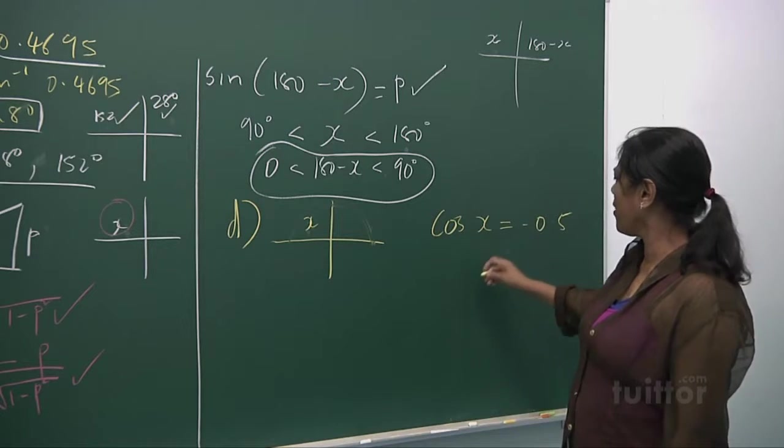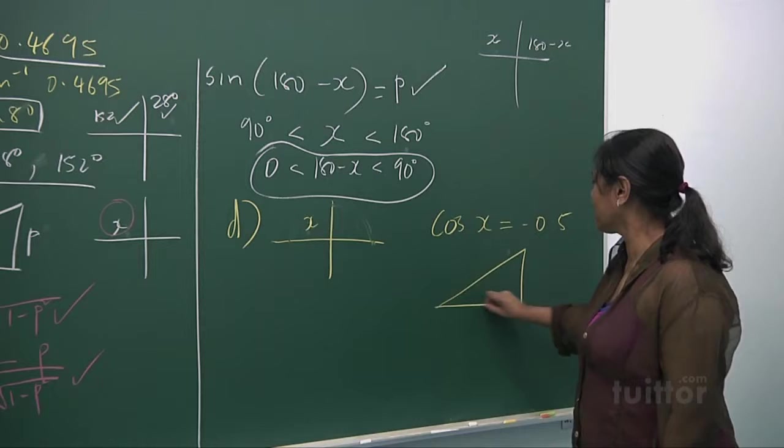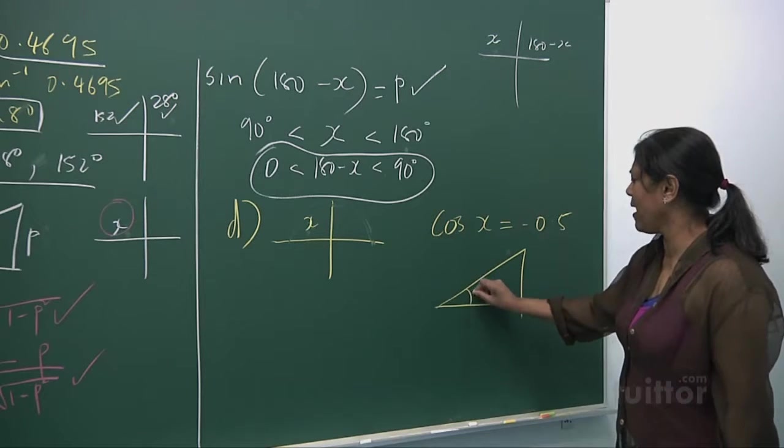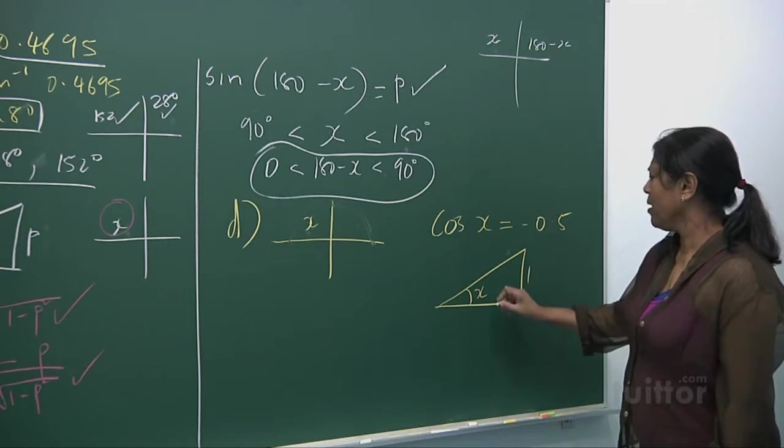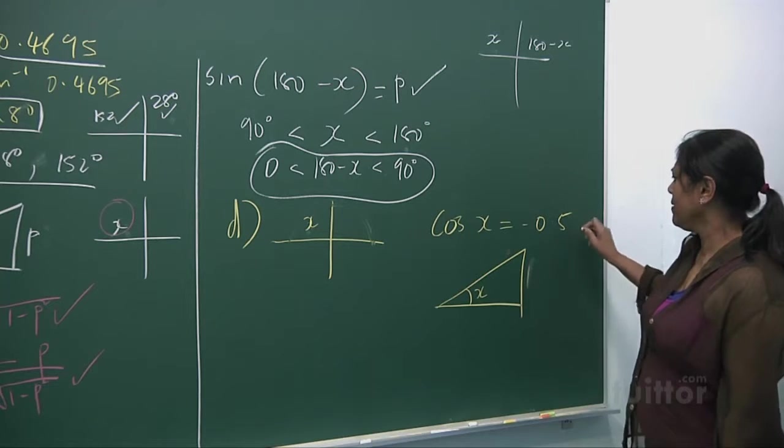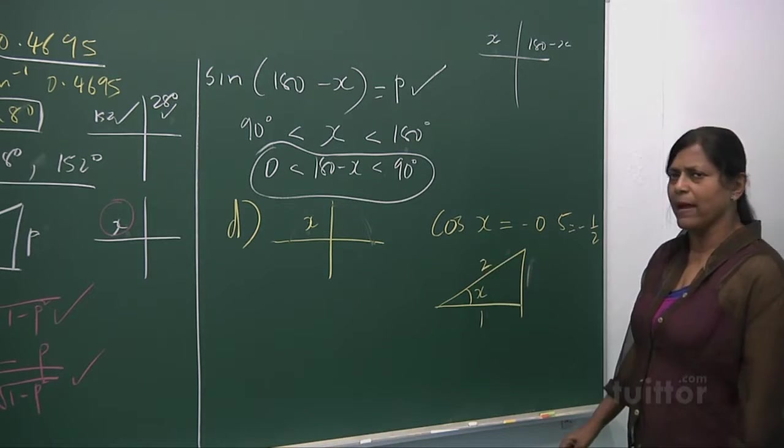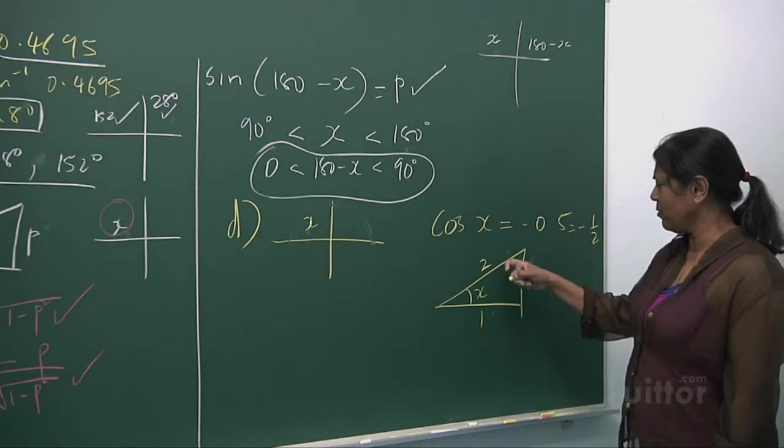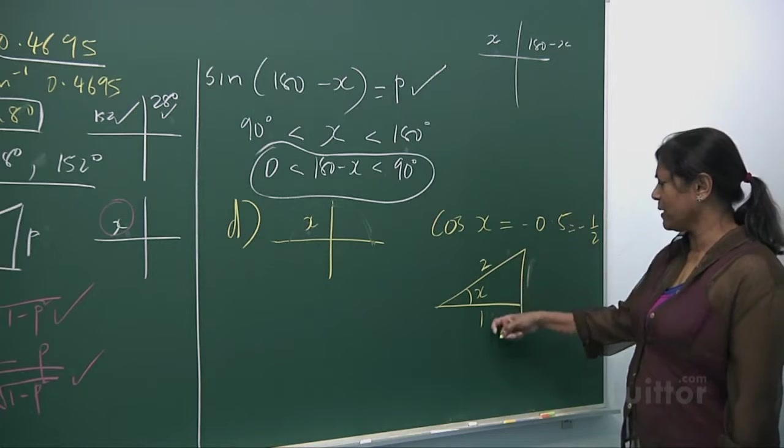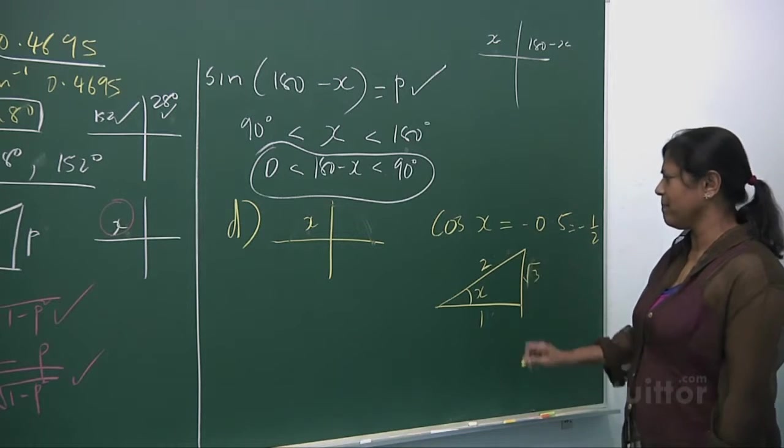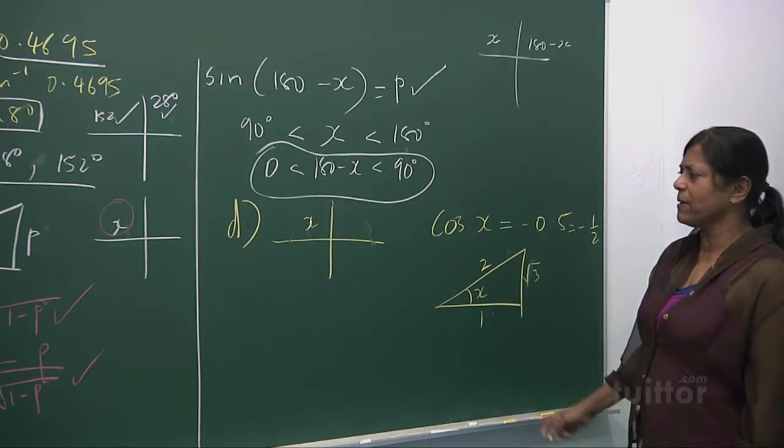Now, what is 0.5? Well, it's a half. And so, your x is 1, sorry, adjacent. This is a minus half adjacent over the hypotenuse. So 1 over 2. Pythagorean theorem, 4 take away 1, root 3. So you look at this picture.